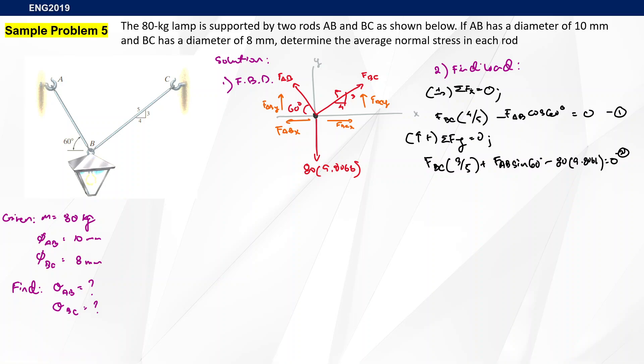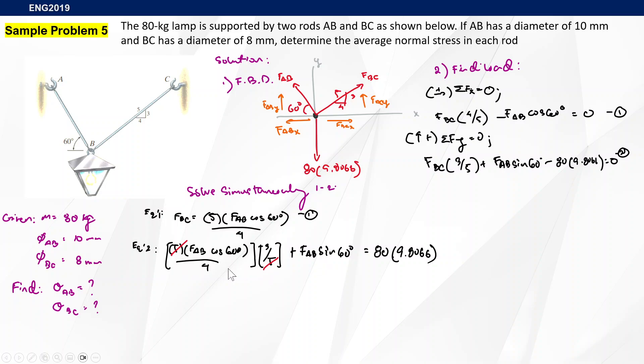FBC and FAB are unknowns, so we have two unknowns and two equations. The next step is to solve them simultaneously. You can do this straight with your calculator, but I prefer rearranging it algebraically. From equation one, we can equate FBC equals 5 times FAB cosine 60 divided by 4. We substitute that to equation two. Cancel all like numbers, and rearranging them properly we can now determine FAB. We already know the weight is 80 times 9.806, so isolating FAB would be something like this.